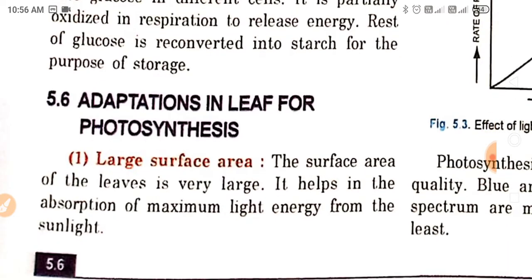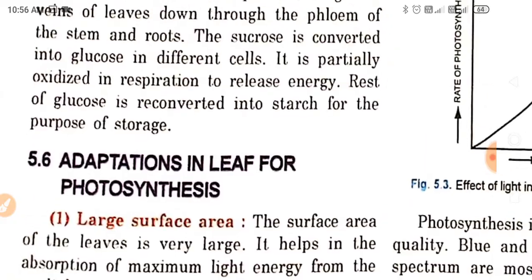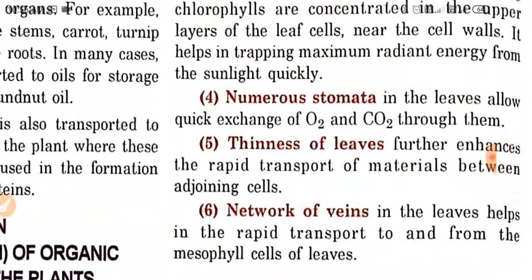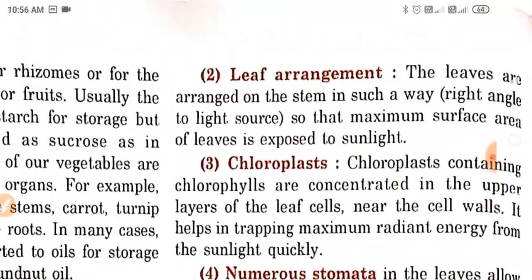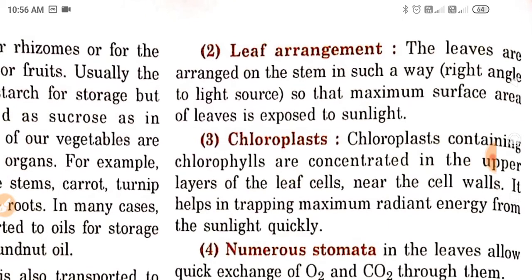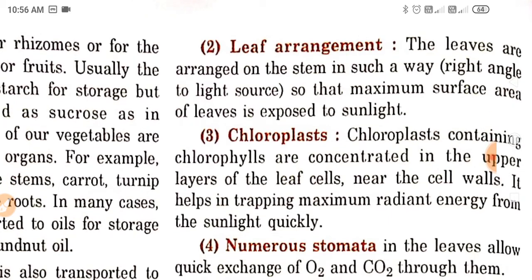There are some adaptations in the leaf for photosynthesis. First is large surface area — the surface area of the leaf is very large, which helps in the absorption of maximum light energy from sunlight. Next is leaf arrangement — the leaves are arranged on the stem at right angles to the light source, so the maximum surface area of leaves is exposed to sunlight.